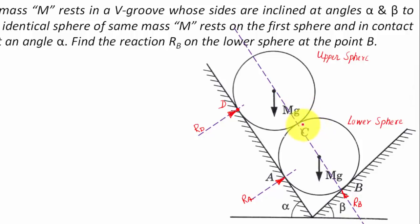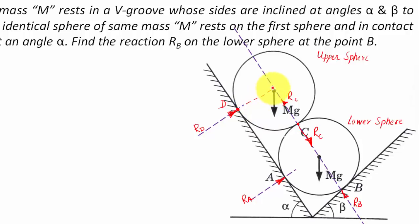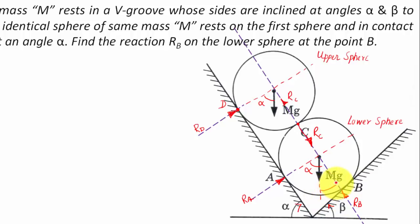Since the two spheres are in contact with each other, the upper sphere will apply a reaction directed towards the center of the lower sphere — this is called RC. The reaction from the lower sphere onto the upper sphere is also RC. Extending the geometry, this angle is alpha, and here also alpha. Similarly, this angle is beta, and extending gives beta here and beta here as well.